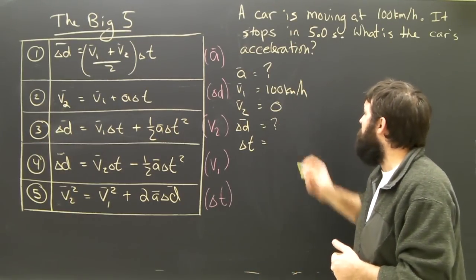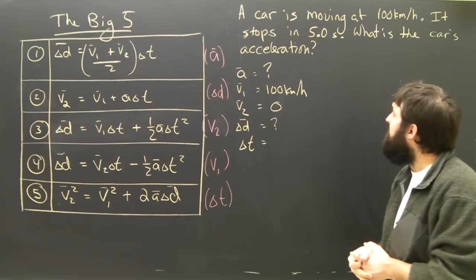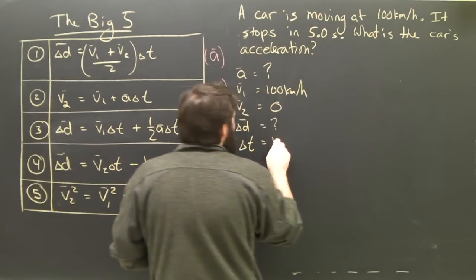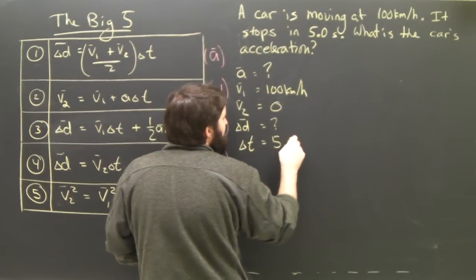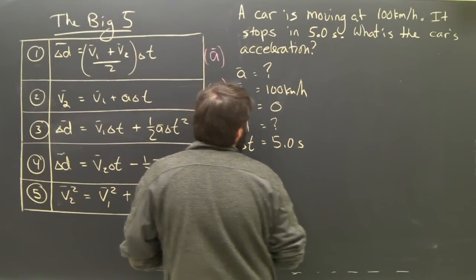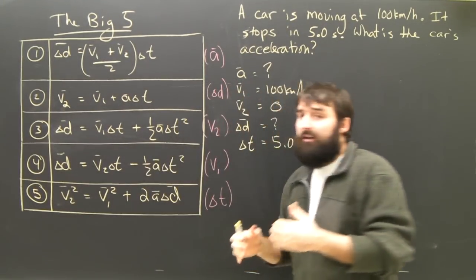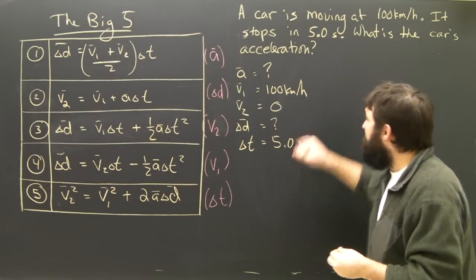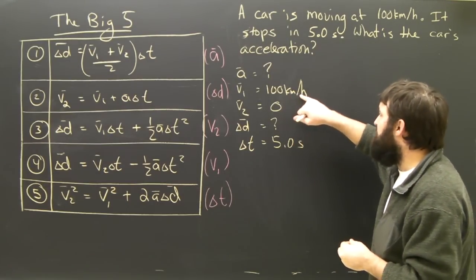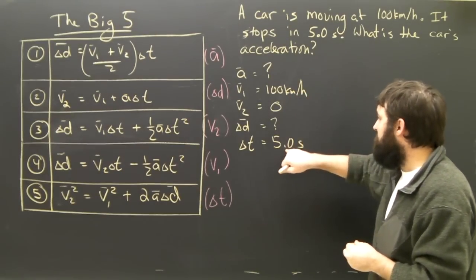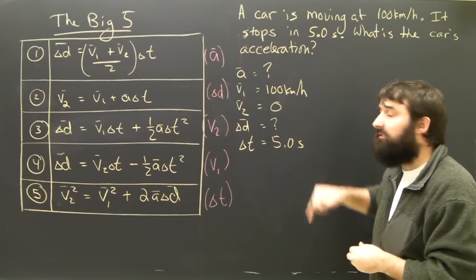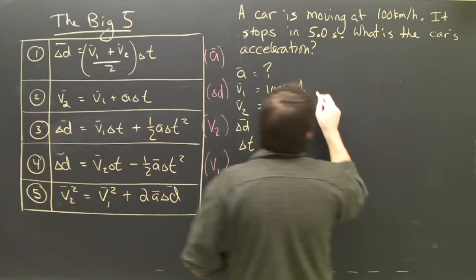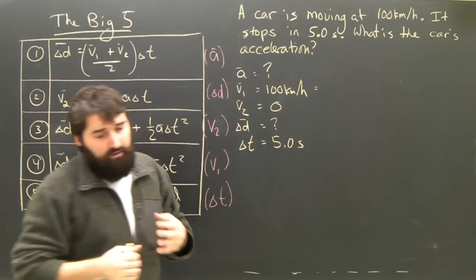How far does it travel? We don't know — we don't know its displacement. Now we know its time is five seconds. I've written my givens, but a little alarm bell is going off because here's kilometers per hour and here's five seconds, so I know that that's not good. I'm going to have to change kilometers an hour.